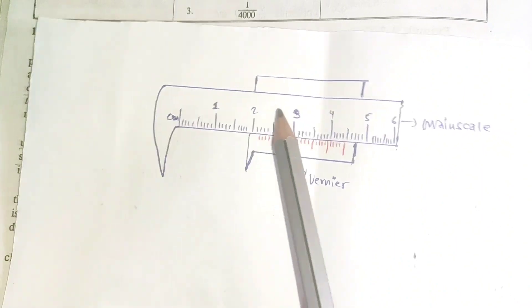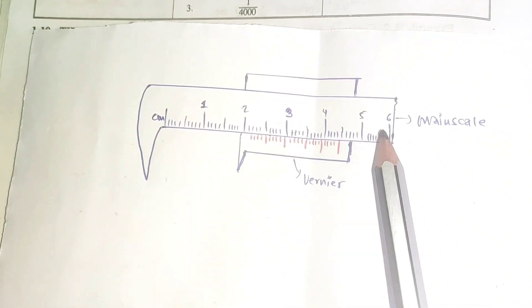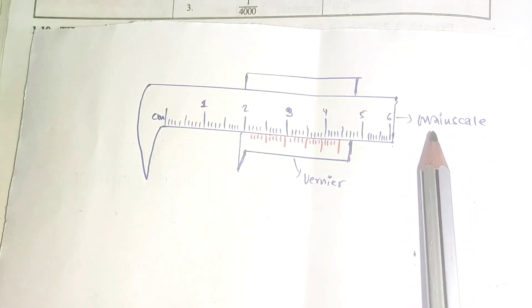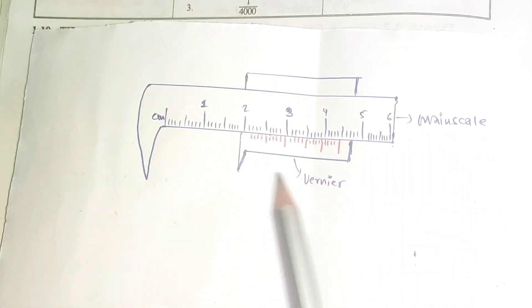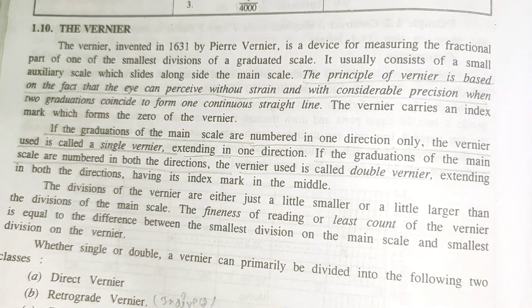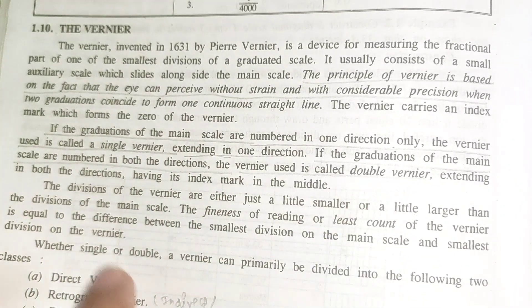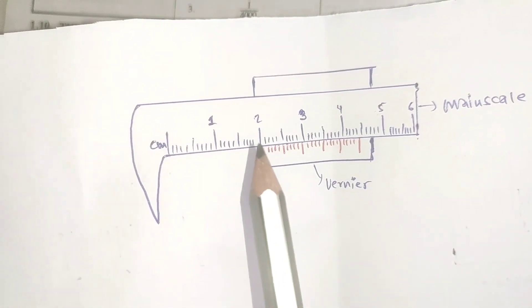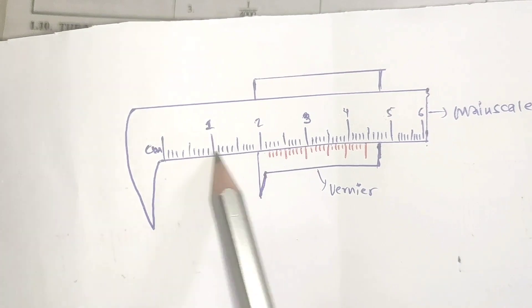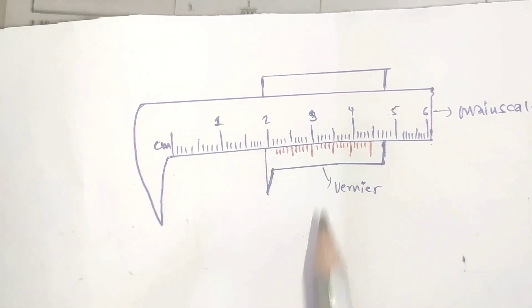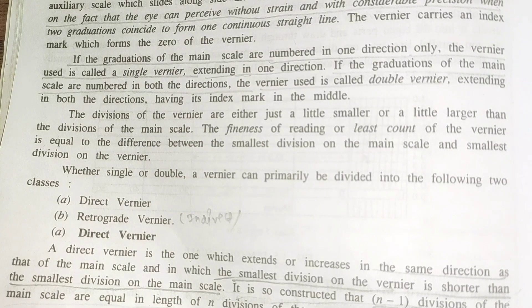Vernier scale — also called Burner scale — is like a fixed scale, main scale, or primary scale. The Vernier scale can be used to measure the smallest unit of an instrument. The Vernier scale types include: single Vernier and double Vernier. Single Vernier is one type, double Vernier is another.